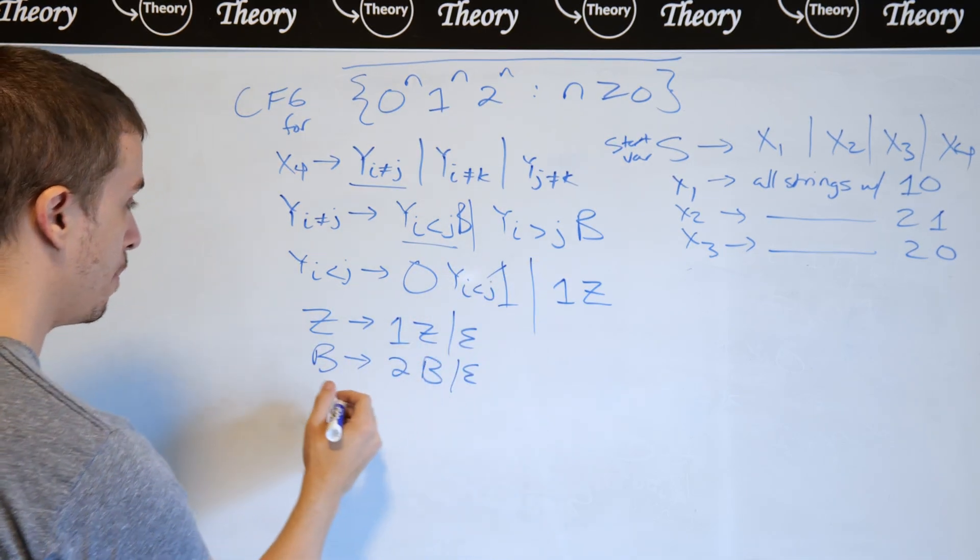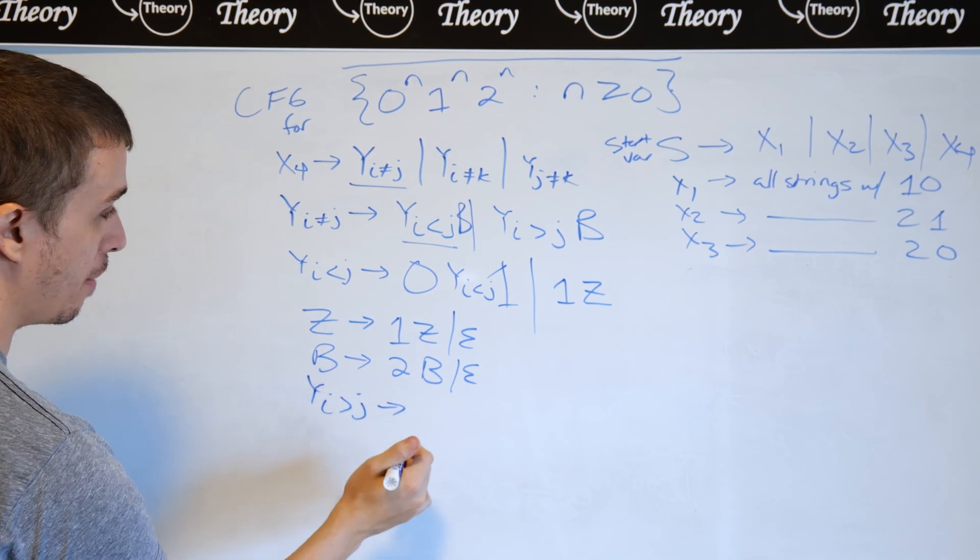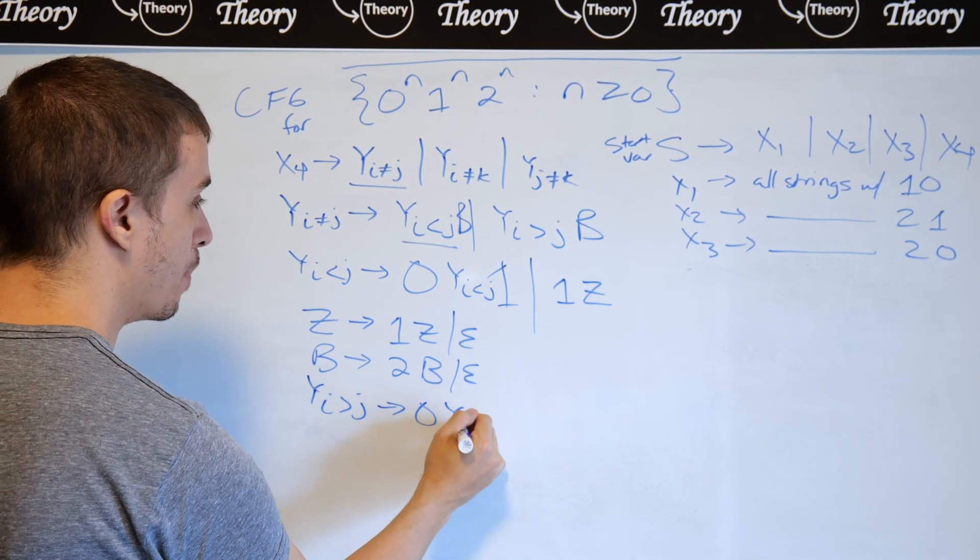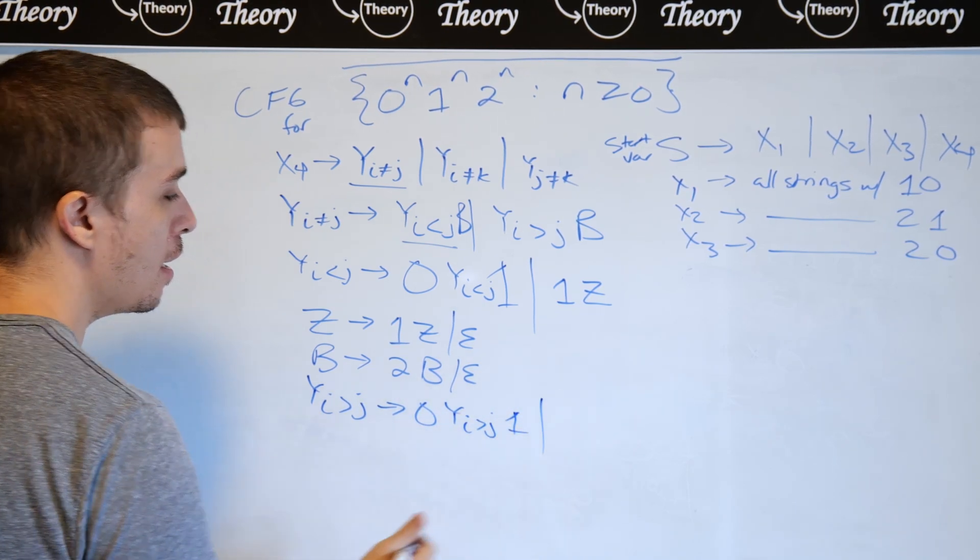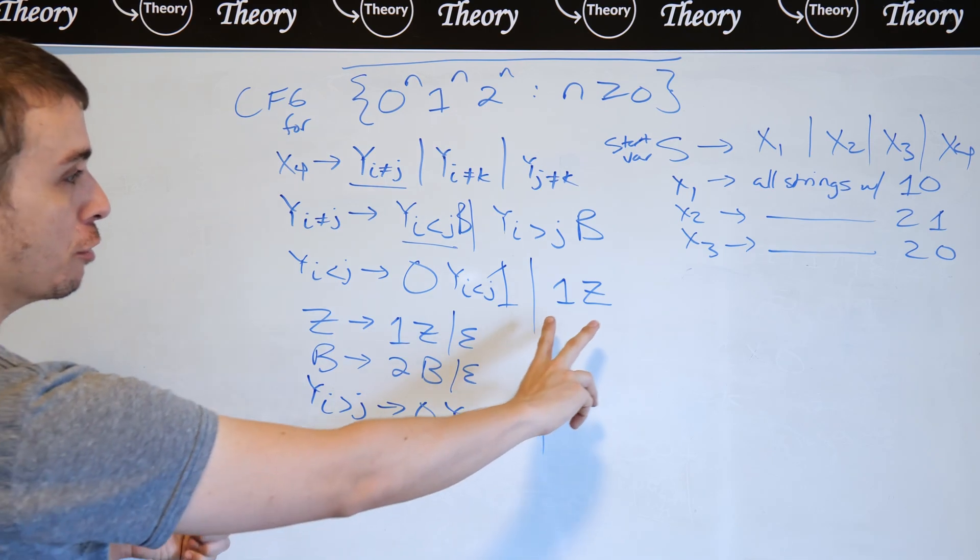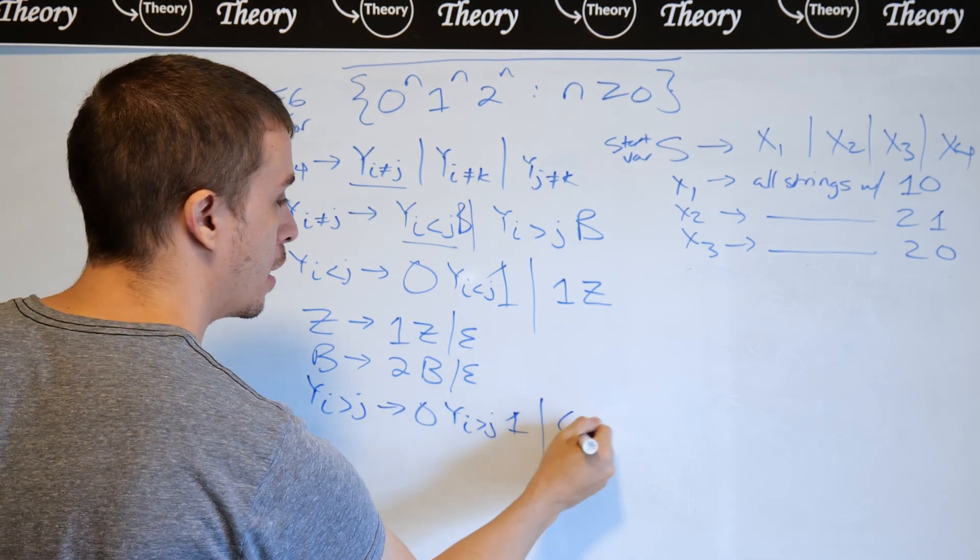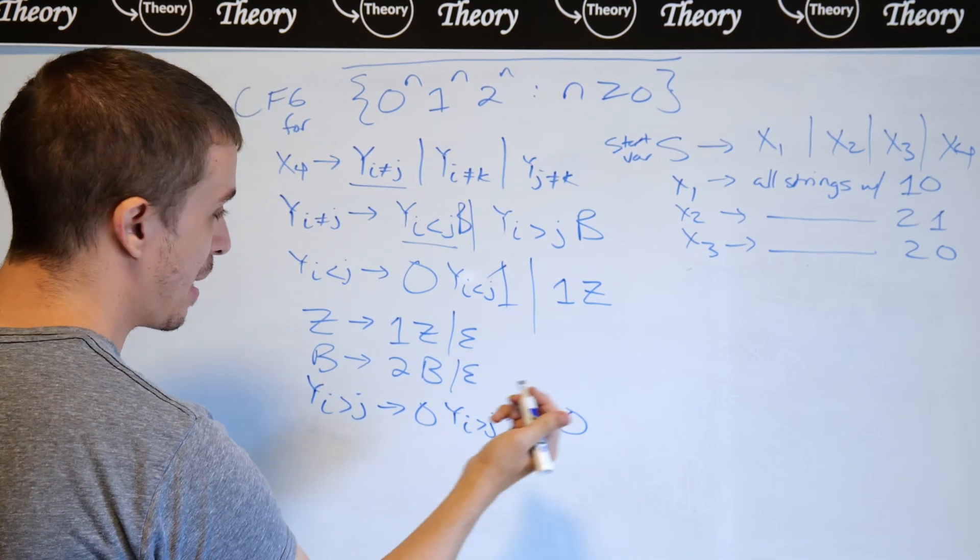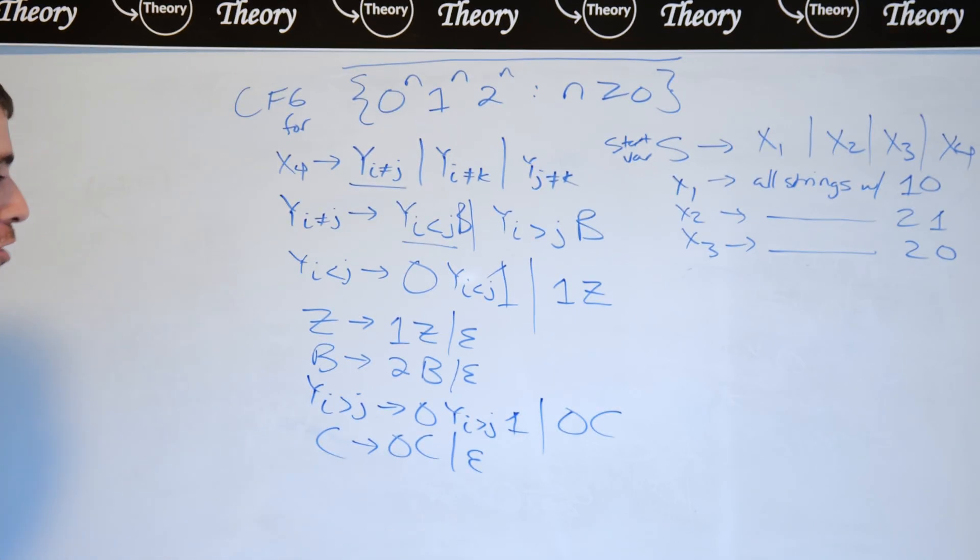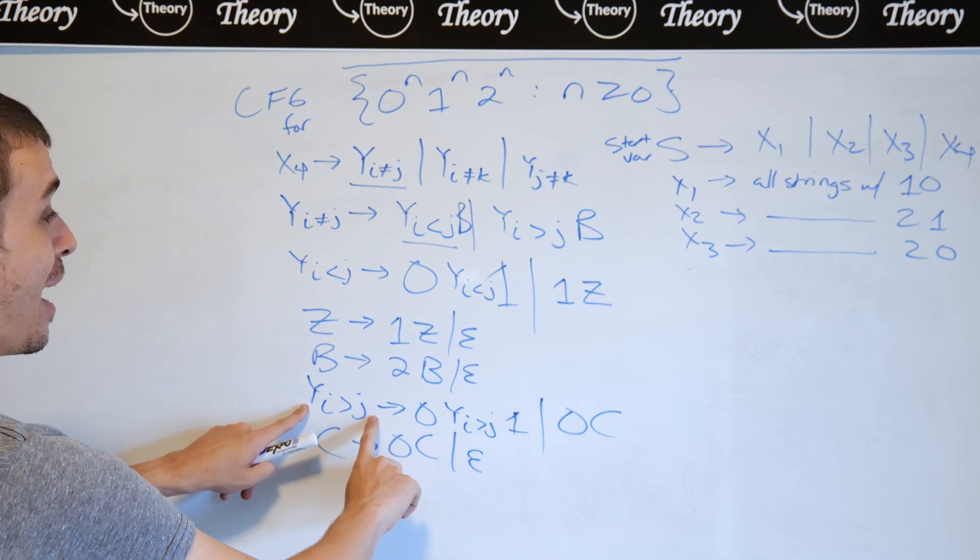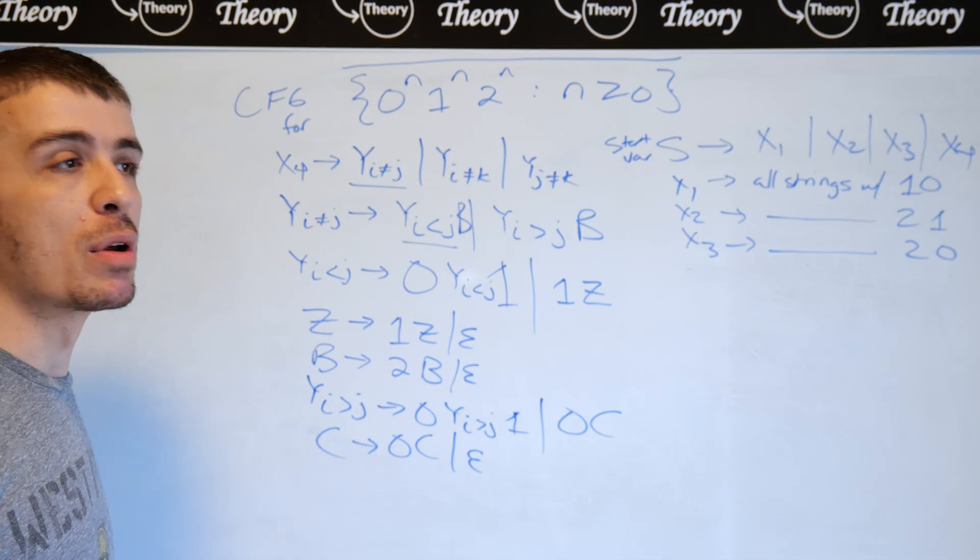And then how do I handle this one is to have y i bigger than j. What it's going to make is them an equal number, so i bigger than j instead right here. But then now I want to make at least one more zero. So here we made at least one more one. I want to make at least one more zero here. So zero, and then I'm going to make a different variable, let's call it c. c is going to make at least zero more zeros. And so therefore, y i bigger than j must make at least one more zero than one, which is exactly what we want.